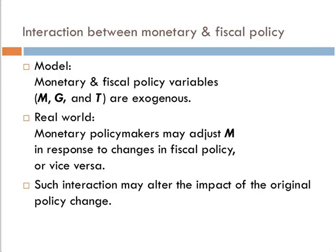In our model, we have monetary and fiscal policy variables. The monetary policy variable is M, the money stock. The fiscal policy variables are G, government spending, and T, taxes.